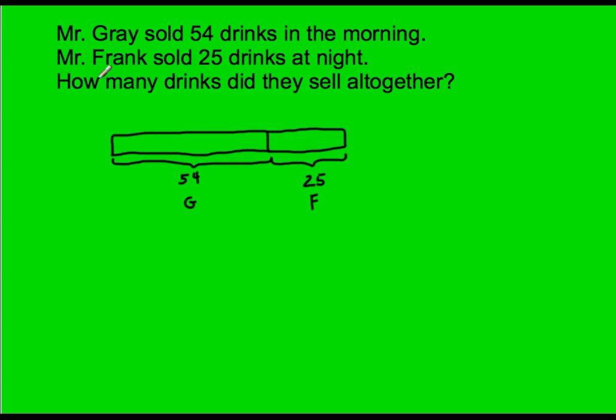Frank. And then I've taken care of both of those pieces of information. And then it says, how many drinks did they sell all together? They is Mr. Gray and Mr. Frank. So how much did they sell all together? I'm trying to figure out all of these drinks sold together. And as you can see here, I am putting these numbers together. I'm trying to find the whole or the total, so therefore this will be an addition problem.